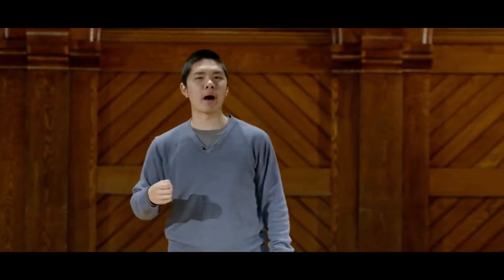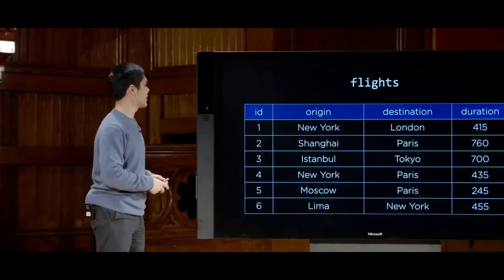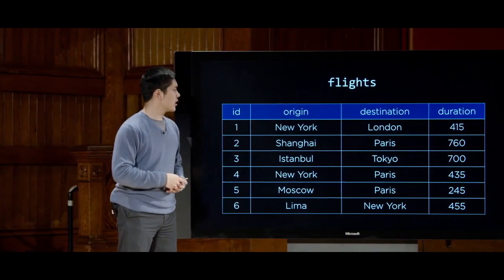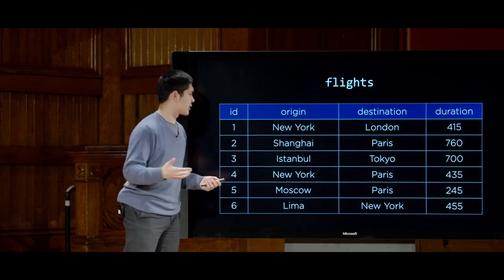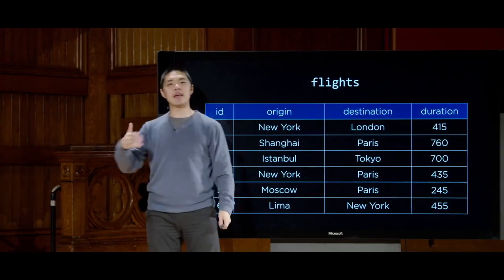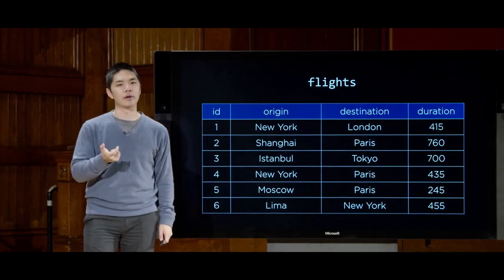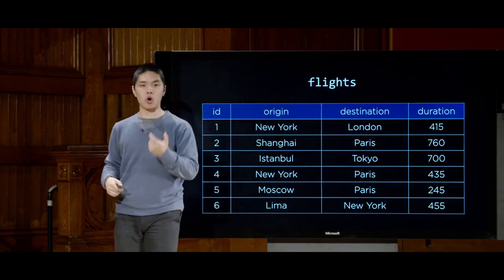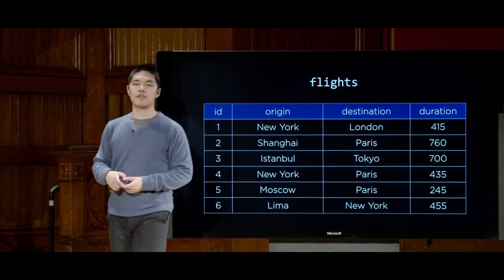Now we have a flights table, but often when dealing with larger databases, we don't just have one table — we have multiple tables that relate to each other. For example, there are multiple airports in New York, so labeling each origin or destination just by city name might not be sufficient. I might also want the three-letter airport code. Rather than just adding more columns to the flights table — which gets wide and has duplicate data — we'll want to normalize this data, separating things into multiple tables that reference one another.